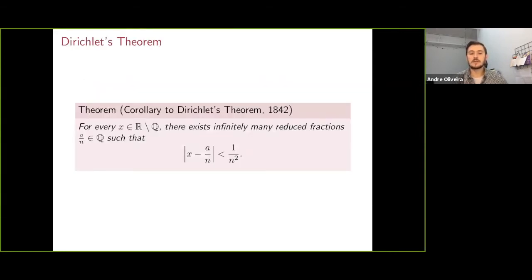A theorem that does this is due to Dirichlet, and it says the following: that every irrational number x has infinitely many rationals that get within 1 over n squared of it.